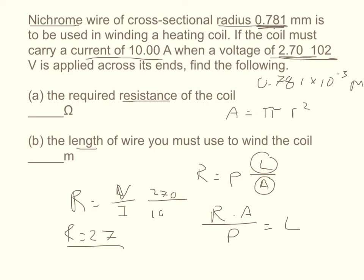So what's the resistivity? You just have to look up the resistivity for nichrome. And the resistivity for nichrome is 1.5 times 10 to the negative 6th.